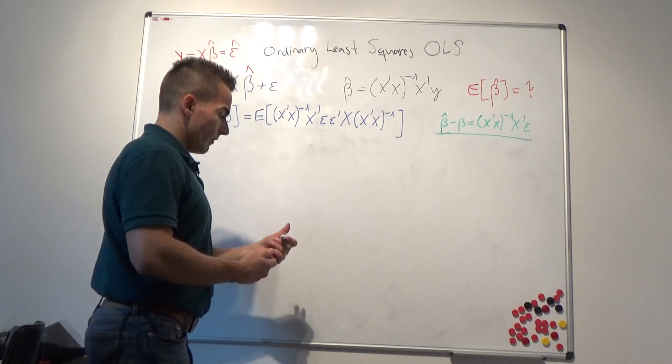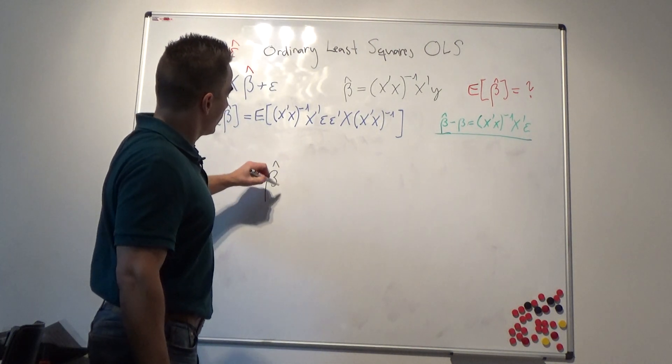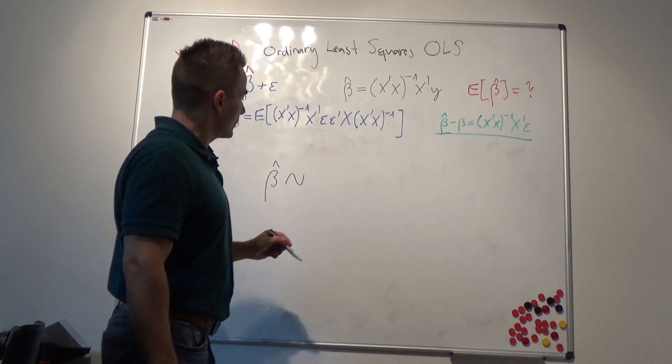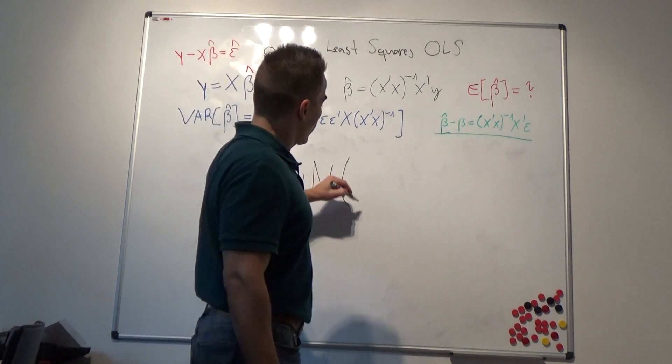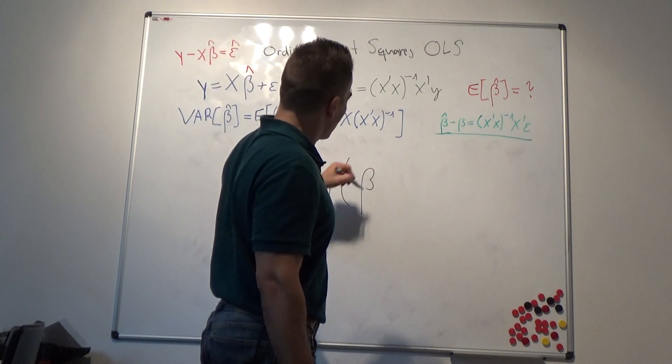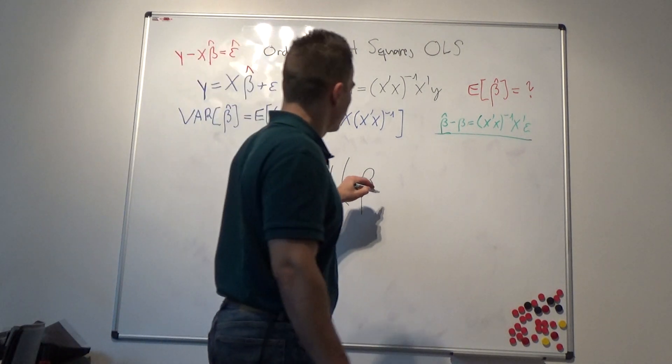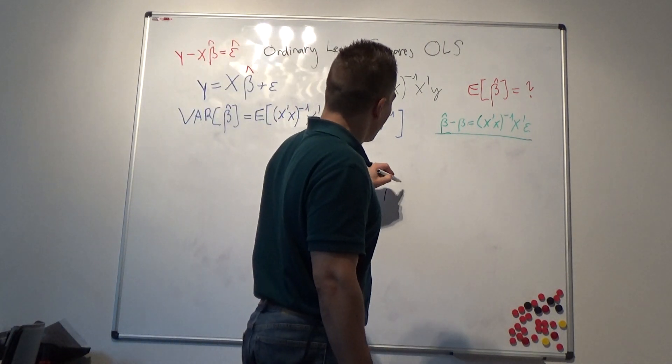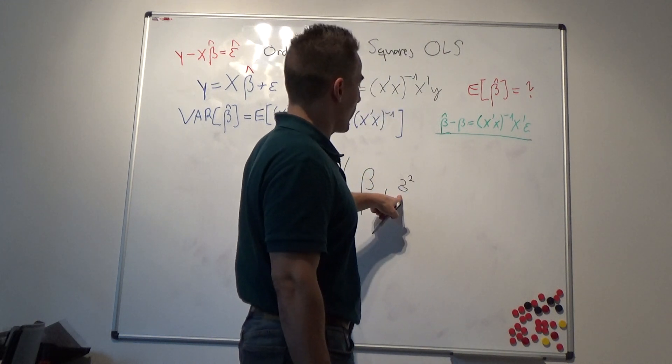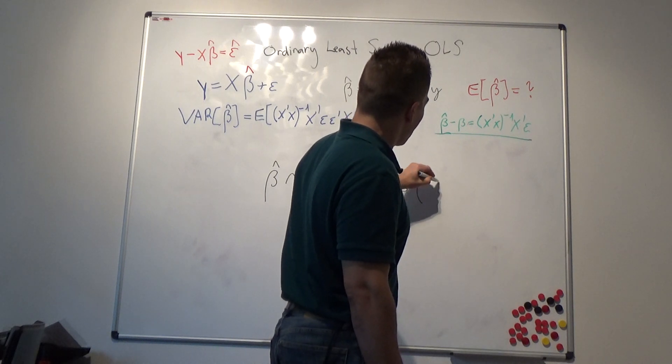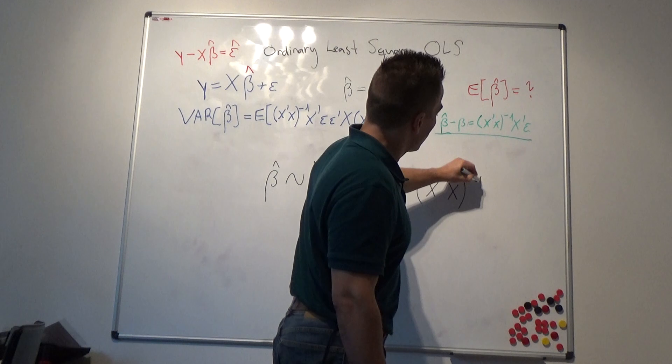So our point estimator, or beta hat, is distributed as multivariate normal with expectation of the true parameter beta and the variance-covariance matrix defined as sigma squared times X transpose X inverted.